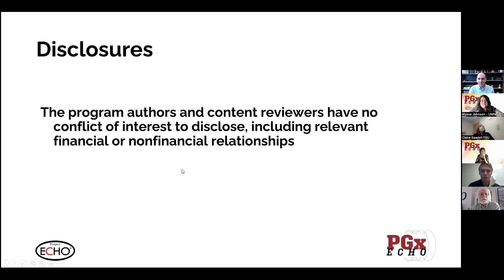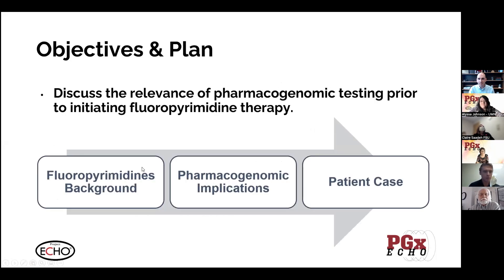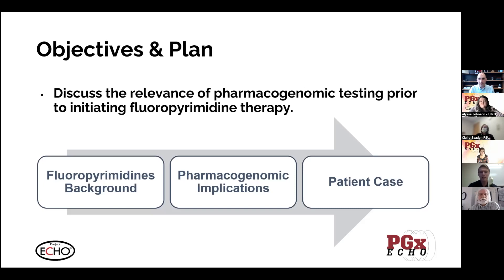None of us have any disclosures or conflicts of interest. Our main objective for today is to discuss the relevance of pharmacogenomic testing prior to initiating fluoropyrimidine therapy. Capecitabine is in a class of drugs called fluoropyrimidines. We'll start with some background about fluoropyrimidines, and then we'll talk about the pharmacogenomic implications, and then Maya is going to talk about our patient case after that.